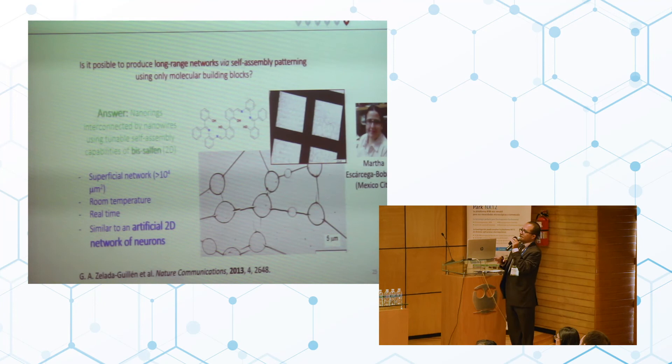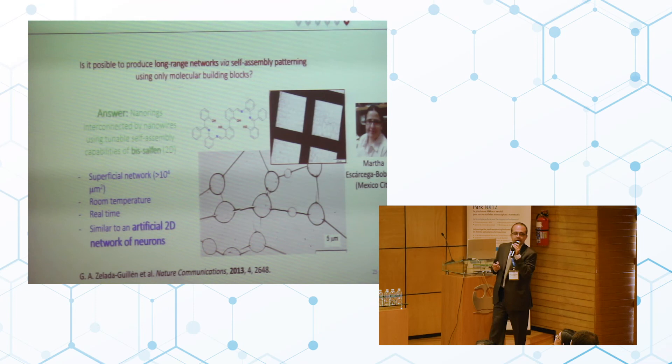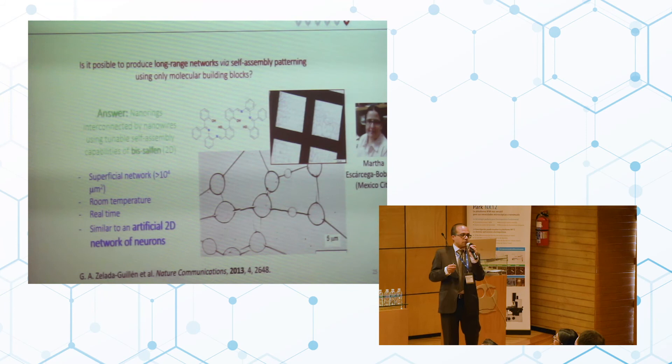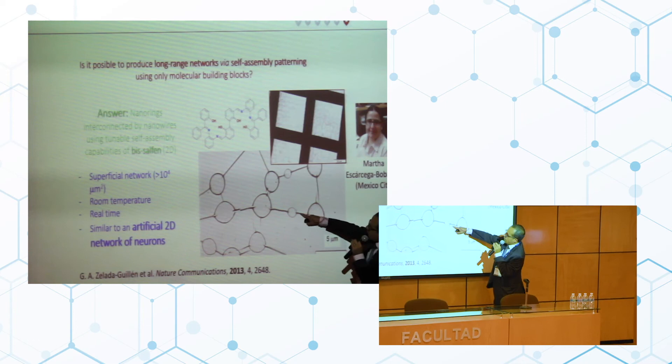The answer was this molecule. She is a collaborator and also my wife. And the answer came up when we observed that this molecule can do this type of patterning in a tert-butyl solution. We can see the scale. Basically this is a nanowire, this is a nanoring interconnected by another nanowire, another nanoring, another nanowire, ring, wire, ring, wire, ring, wire, ring. This is a two-dimensional network. But also it's a repetitive pattern because you can see that it is repeated at surfaces higher than 10,000 square micrometers. So the advantage of this is that it could be done at room temperature in real time and it's similar to an artificial 2D network of neurons.